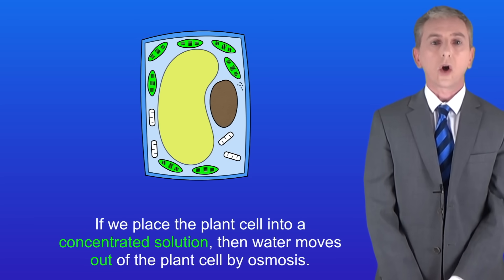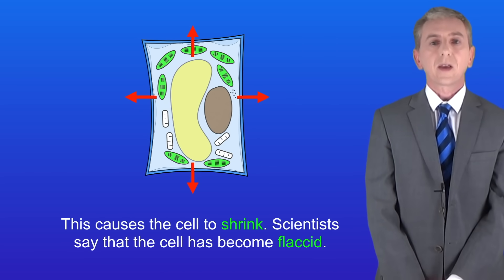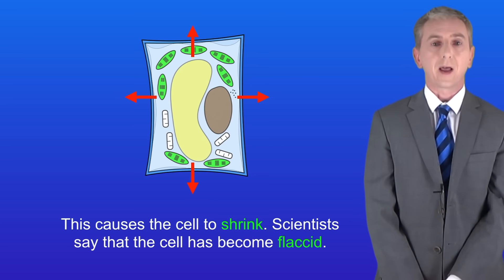If we place the plant cell into a concentrated solution then water moves out of the plant cell by osmosis like this. This causes the cell to shrink. Scientists say that the cell has become flaccid.